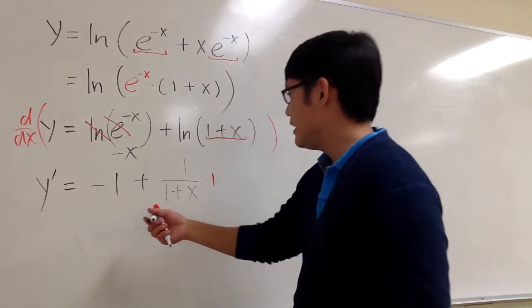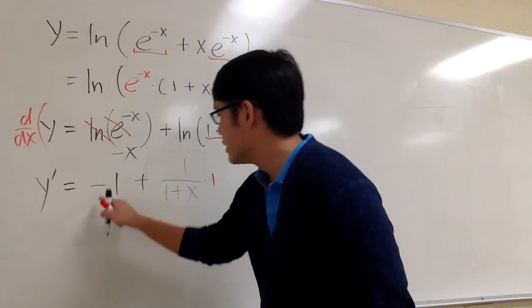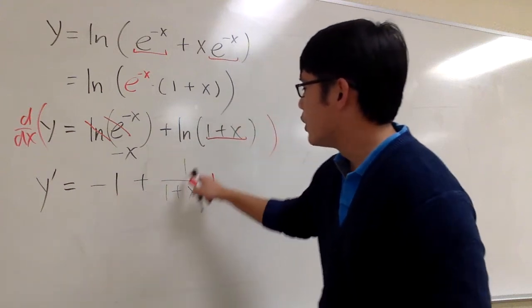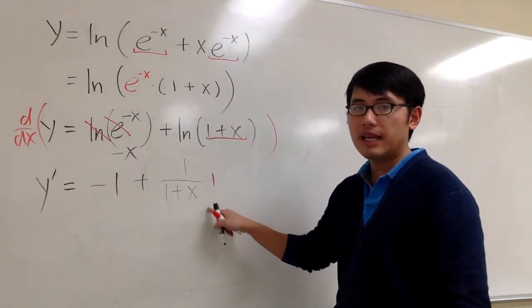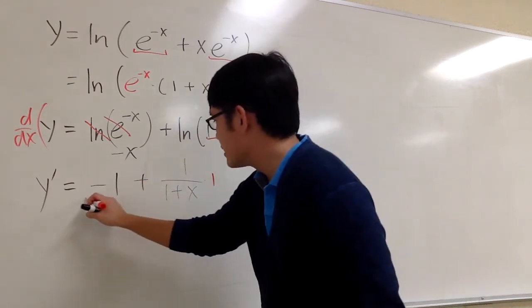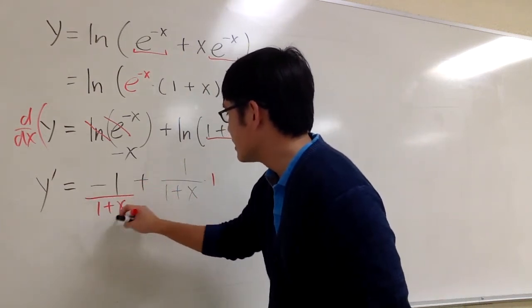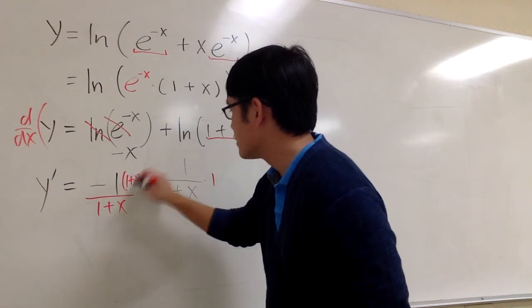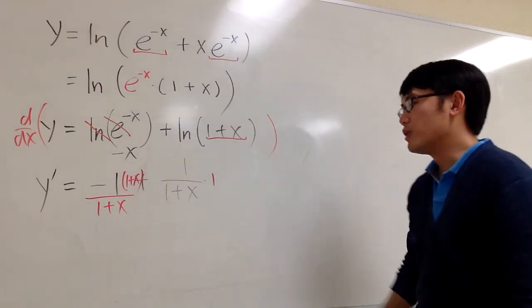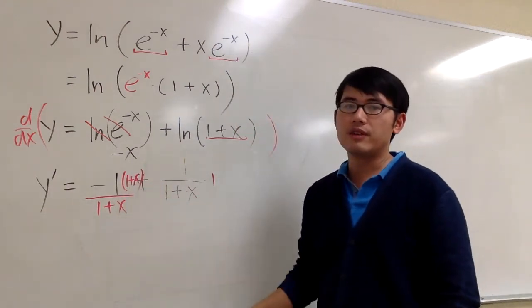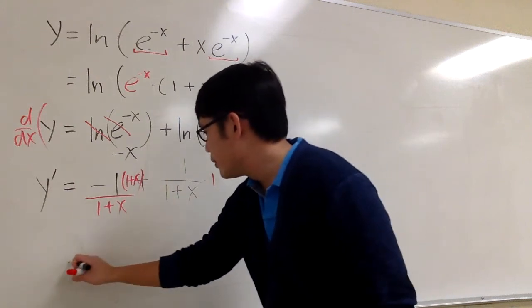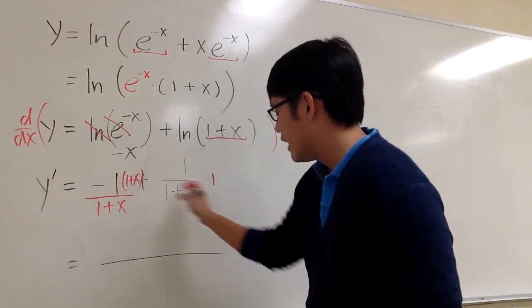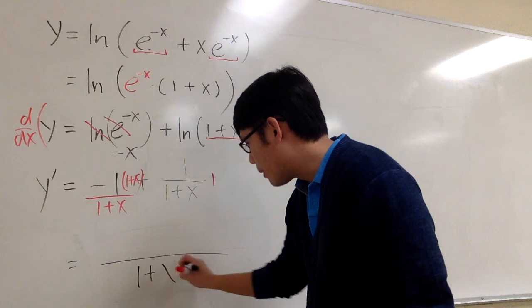And then to get the answer in the back of the book, what we'll do is, this is negative 1 plus 1 over 1 plus x. What we'll do is put this as 1 plus x, and I'll do that on top as well. So multiply the top and bottom by 1 plus x for the first one. And then I'm looking at this as they have the same denominator now, 1 plus x.